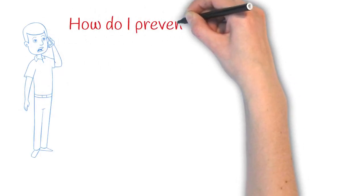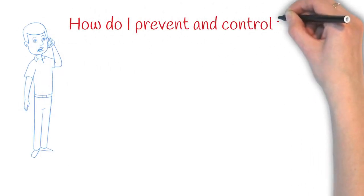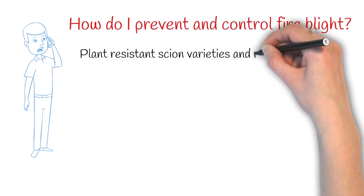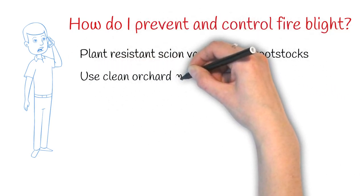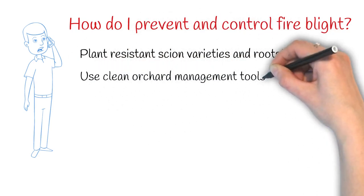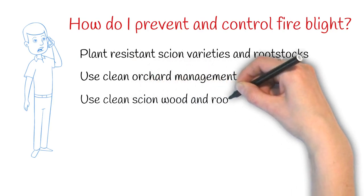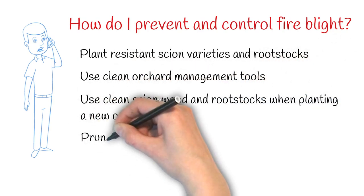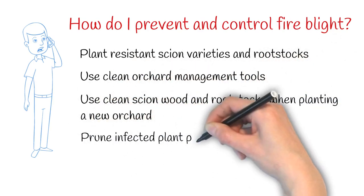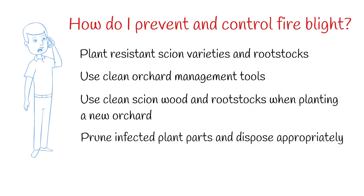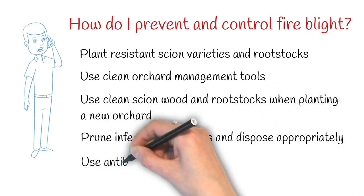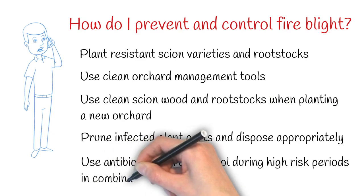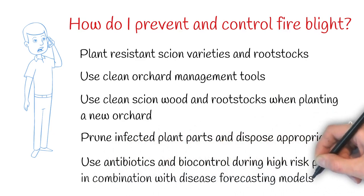How do I prevent and control fire blight? Plant resistant scion varieties and rootstocks. Use clean orchard management tools. Use clean scion wood and rootstocks when planting a new orchard. Prune infected plants and dispose appropriately. Use antibiotics and biocontrol during high risk periods in combination with disease forecasting models.